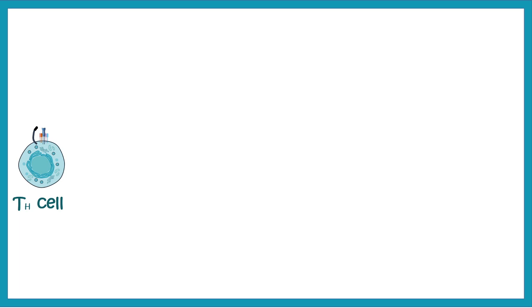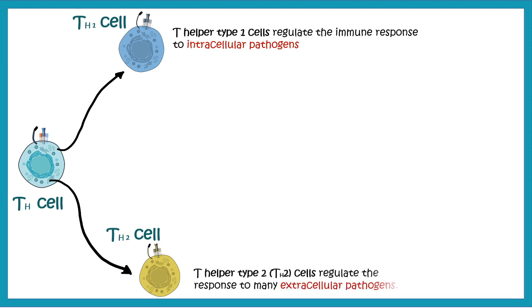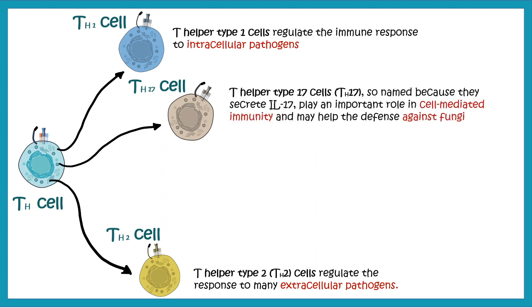T helper cells can get differentiated into several sub-populations depending upon the cytokines that they encounter. For example, T helper cells can be differentiated into the TH1 sub-population, which helps to bring out the immune response against intracellular pathogens, and TH2 cells, which help to fight against extracellular pathogens. Apart from these varieties, there are TH17 cells, which are solely responsible for cell-mediated immunity and defense against fungus.